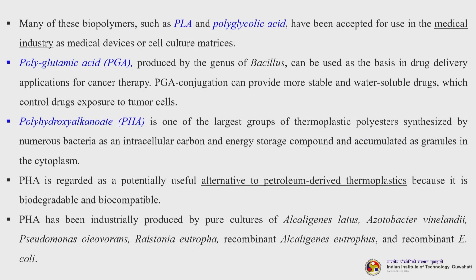Many biopolymers such as polylactic acid and polyglycolic acid have been accepted for use in the medical industry as medical devices or cell culture matrices. Polyglutamic acid produced by Bacillus species can be used as the basis in drug delivery applications for cancer therapy. PGA conjugation can provide more stable and water-soluble drugs which control drug exposure to tumor cells. Polyhydroxyalkanoate (PHA) is one of the largest groups of thermoplastic polyesters synthesized by numerous bacteria as an intracellular carbon and energy storage compound accumulated as granules in the cytoplasm. PHA is regarded as a potentially useful alternative to petroleum-derived thermoplastics because it is biodegradable and biocompatible. PHA has been industrially produced by pure cultures of Alcaligenes latus, Azotobacter vinelandii, Pseudomonas oleovorans, Ralstonia eutropha, recombinant Alcaligenes eutrophus, and recombinant E. coli.